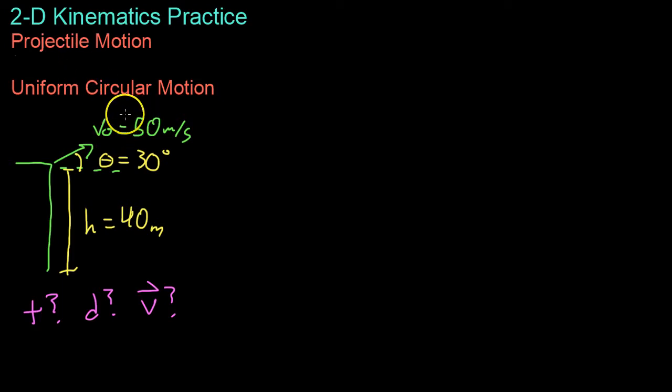Here we have an example projectile motion problem and this is pretty simple. You have some cannon that fires this purple cannonball off of a cliff of height 40 meters with initial velocity 50 meters per second. And you first angle the cannon 30 degrees above the horizontal. So here you have this angle and here is 30 degrees.